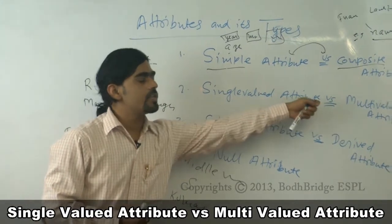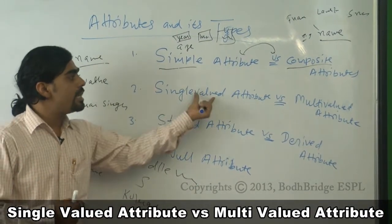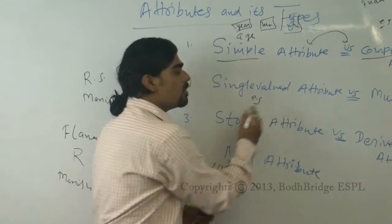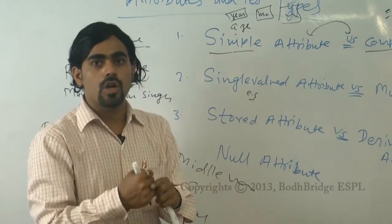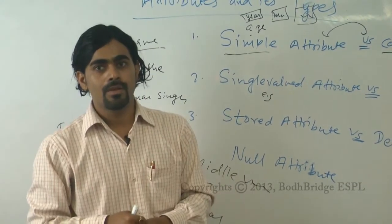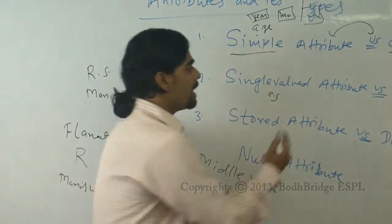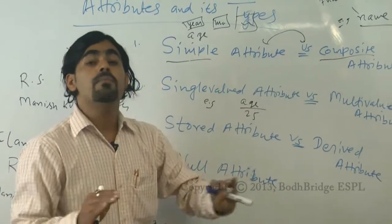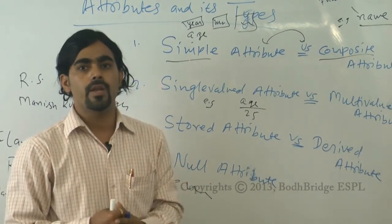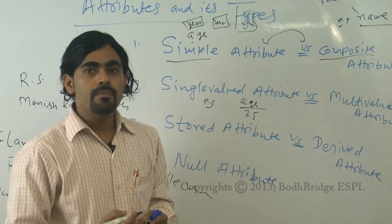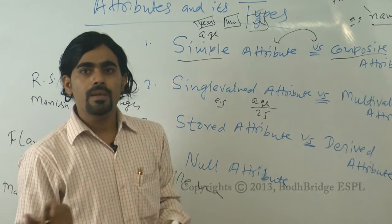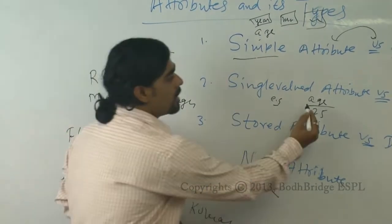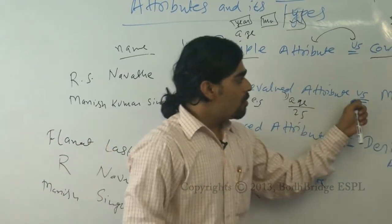The second type is single-valued versus multi-valued attributes. A single-valued attribute accepts only one value per record. For example, 'age' — you cannot have two ages like 25 and 27 simultaneously. Similarly, 'name' as it appears on your certificate is only one value, even if it contains multiple fields.